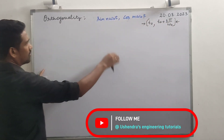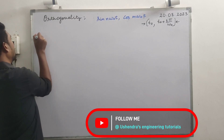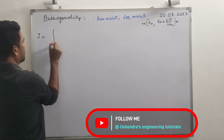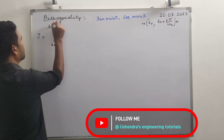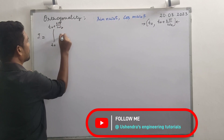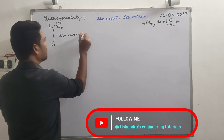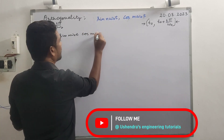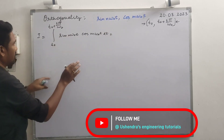So we need to show that the integration of this product is equal to zero. We start with the integral I, with limits from t₀ to t₀ plus 2π by ω₀, of sin(nω₀t) into cos(mω₀t) dt.